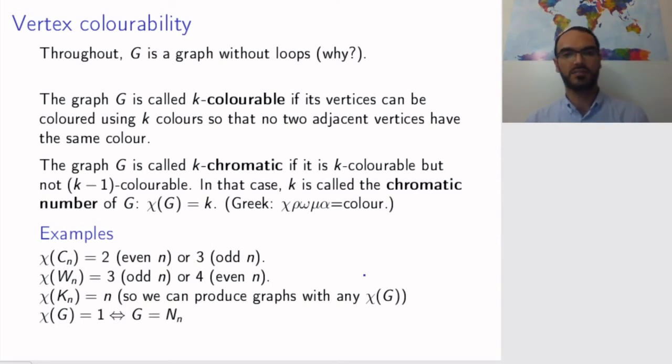A graph being one colorable means that you can color all vertices in one color. So no edges are between vertices of this same one color. This simply means there are no edges. So the graph is a null graph. And as we said, two colorability is the same as being bipartite.